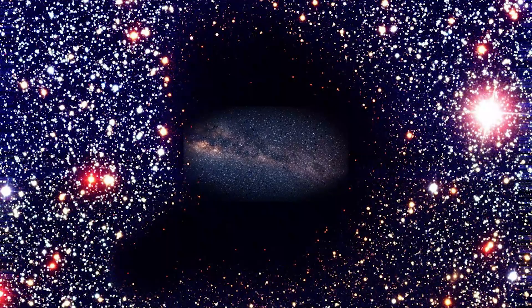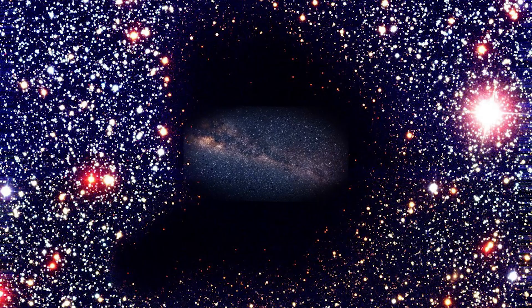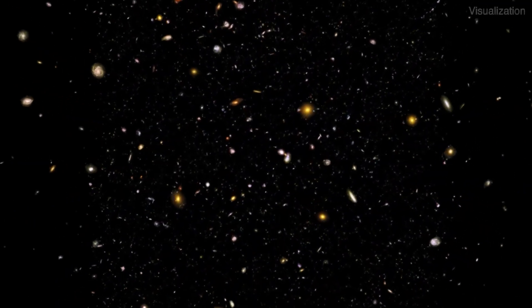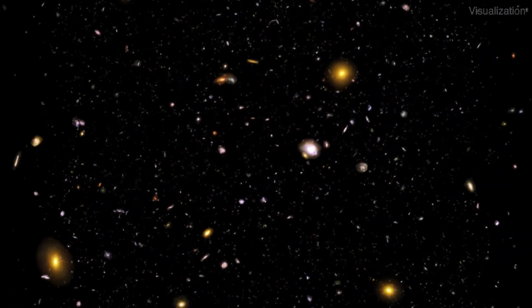The scary thing about the void, according to Greg Aldering, is that if our Milky Way had been situated in the middle of the Boötes void, we would not have realized there were any other galaxies until the 1960s.